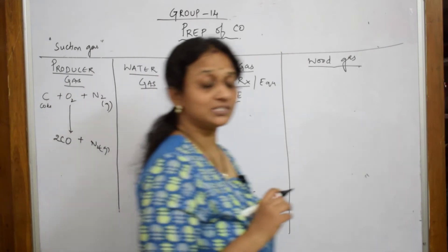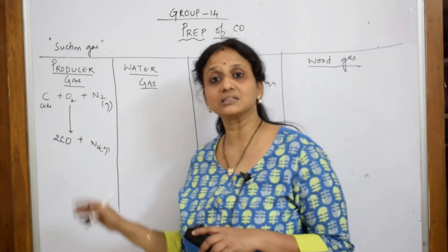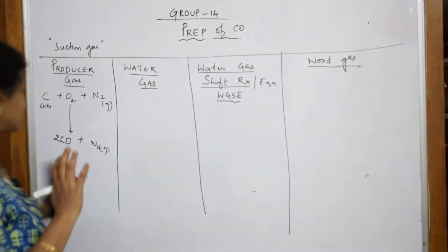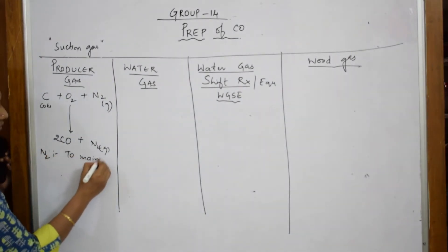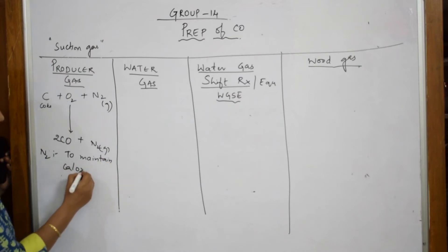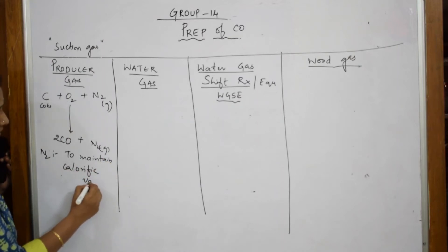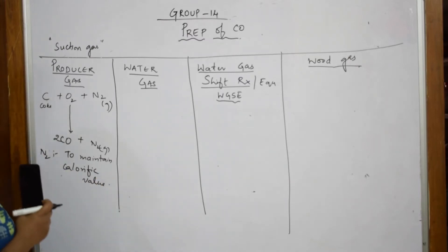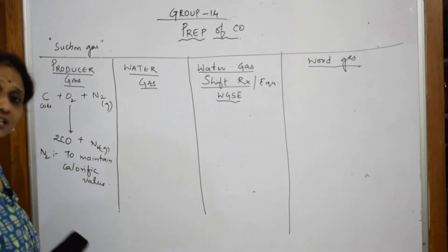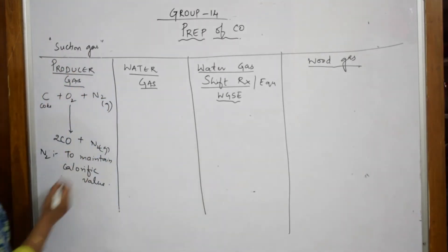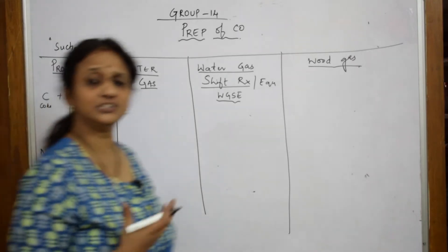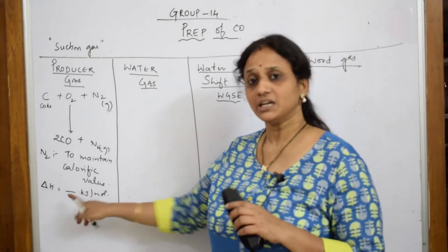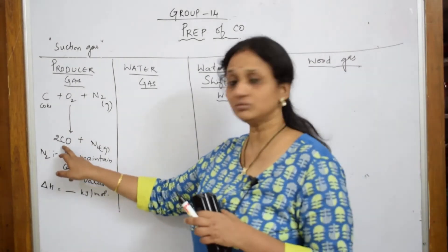The use of this nitrogen in this particular reaction is to maintain calorific value. What is calorific value? This particular reaction is a highly exothermic reaction. The delta H value is highly exothermic — a large amount of energy is released. We already know carbon monoxide gets poisoned.